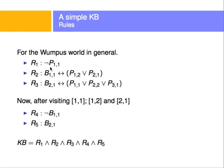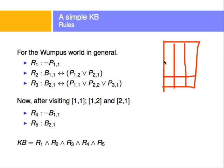The first rule is: there is no pit at (1,1), because that's where I start. The second rule: breeze at (1,1) if and only if there's a pit at (1,2) or a pit at (2,1) — because those are the only squares adjacent to (1,1).